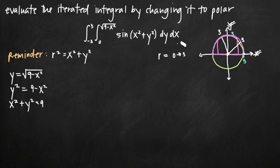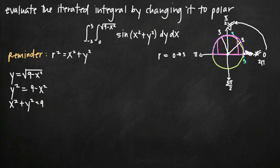For the limits of integration for theta, in a polar coordinate system you start at angle 0, and as you work counterclockwise you hit pi over 2, then pi, then 3 pi over 2, before completing the full circle back to 2 pi. Since we're only dealing with the half circle above the x-axis, theta starts at 0 and stops at pi. If we were talking about the full circle, we would go 0 to 2 pi. But based on our limits of integration, theta goes from 0 to pi.